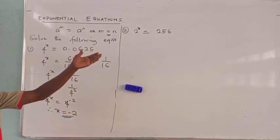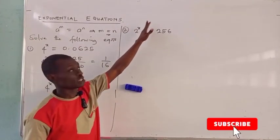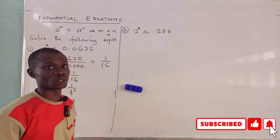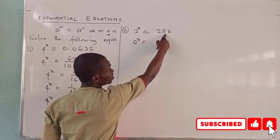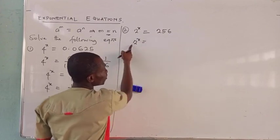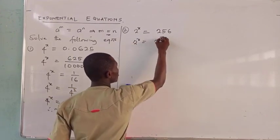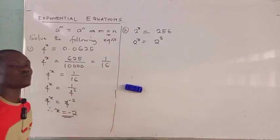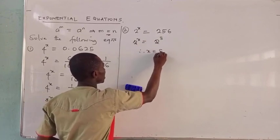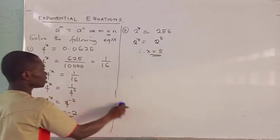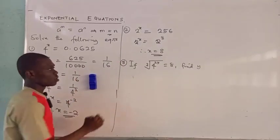The second example: 2 raised to power x equals 256. To solve an equation you need the value of the unknown. Our interest is: can we put 256 in index form with base 2? Yes — 2 raised to power 8 gives 256. Since the bases are the same, we take them away and x equals 8.